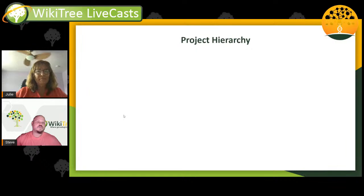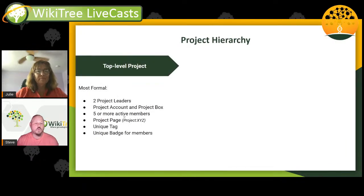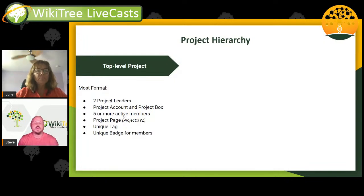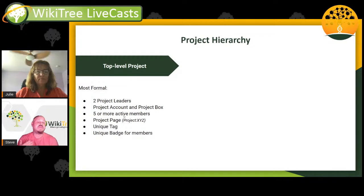We have three types of projects. The first are top-level projects — the most formal projects on WikiTree. These have at a minimum two project leaders, a project account, a project box for managing profiles, at least five or more active members, a project page in the project namespace, a unique tag that members follow, and a unique badge issued to members.